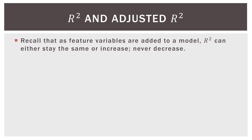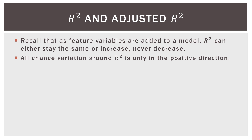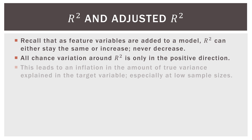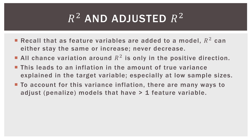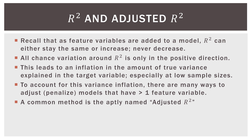R-square and adjusted R-square. Recall that as feature variables are added to a model, R-square can either stay the same or increase — never decrease. All chance variation around R-square is only in the positive direction. This leads to an inflation in the amount of true variance explained in the target variable, especially at low sample sizes.